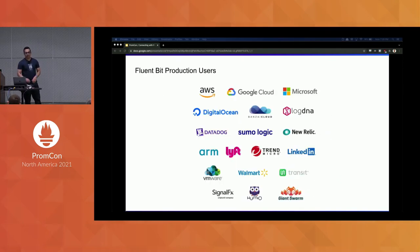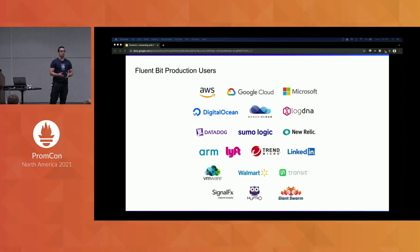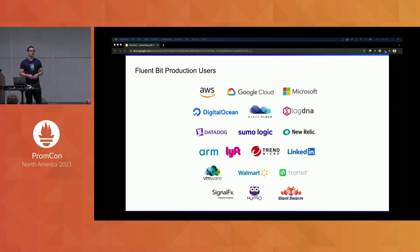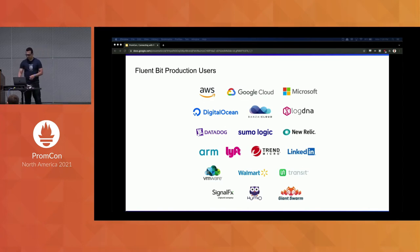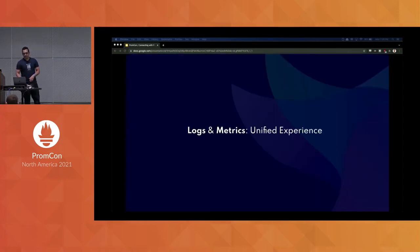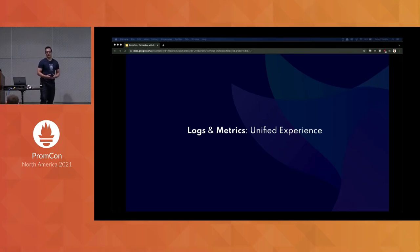FluentD and FluentBit are used widely. Adoption started to grow when AWS, Microsoft, and Google started using them in their own infrastructure. Nowadays, just from public repos, FluentD and FluentBit are deployed more than 2 million times a day. We don't have stats from private repos, but it should be 10x more. Now let's talk about logs and metrics and this unified experience.